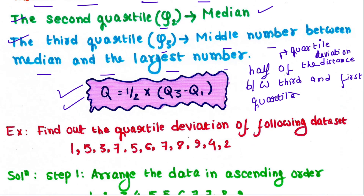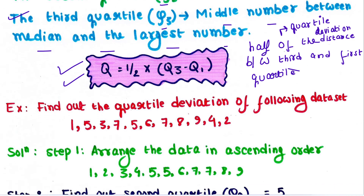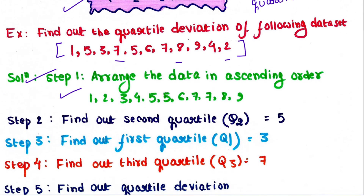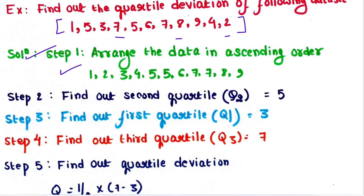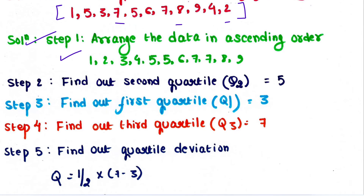Let's find the quartile deviation of the following data set. Step 1 is to arrange the data in ascending order — we arrange and get the ordered data set. Step 2 is to find the second quartile first, which is the median. Here 5 is the median because above 5 we have 5 values and below 5 we also have 5 values, so 5 is the middle number.